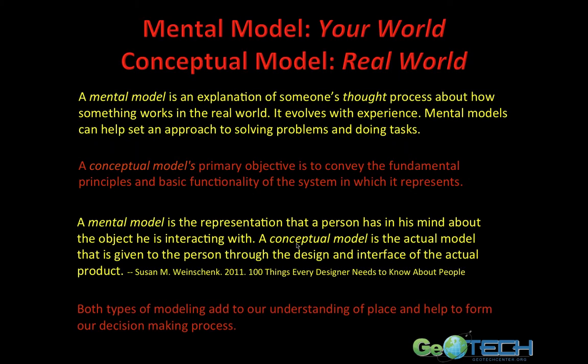Let's take a look at mental models versus conceptual models. A mental model is an explanation of someone's thought process about how something works in the real world — it will evolve with experience. A conceptual model's primary objective is to convey the fundamental principles and basic functionality of the system it represents. A mental model is the representation a person has in his or her mind about the object he or she is interacting with, while a conceptual model is the actual model given through the design and interface of the actual product. Both types of modeling add to our understanding of place and help to form our decision making.